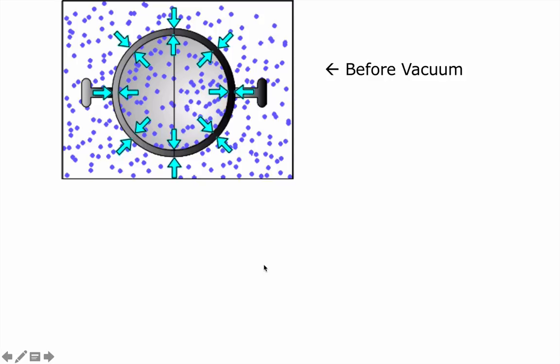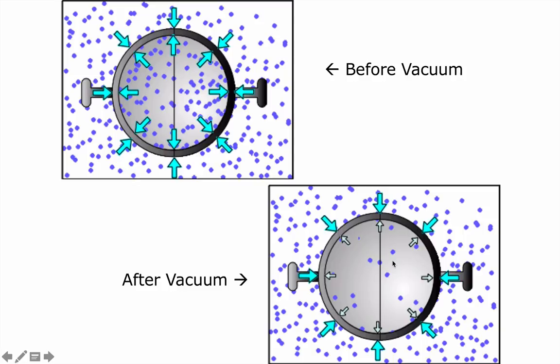Why couldn't the horses pull the spheres apart? Before the vacuum was applied, the air pressure and air density on the inside of the spheres equaled that on the outside. Air pressure is a collision force — the force exerted by the air against a surface. When you remove the air from the inside, you have fewer molecules colliding on the inside compared to the outside. I have a pair of Magdeburg spheres only five inches in diameter, and you need about 300 pounds of force to get them apart. It's incredible how powerful air pressure is.